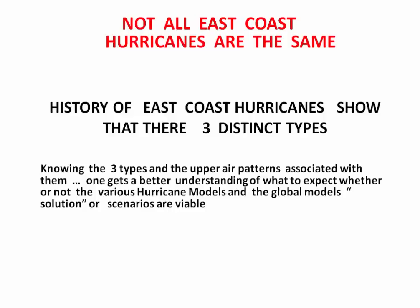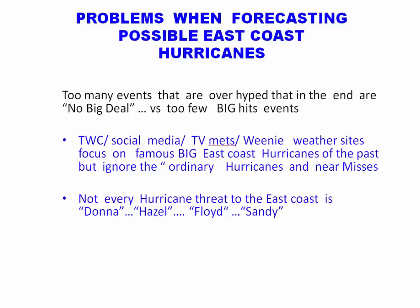Not all East Coast hurricanes are the same. It's an obvious point, but it gets lost a lot of times. The history of East Coast hurricanes shows three distinct types. Knowing these three types and the upper air patterns associated with each will give you a better understanding of what to expect — whether the hurricane models' solutions are viable, or whether they're not. The classic case of this is Sandy 2012. No hurricane had ever come up the East Coast and made a sharp turn into New Jersey like that. The problem is that way too many events are overhyped and end up being no big deal, versus the few big hit events like Donna, Sandy, or Hazel.